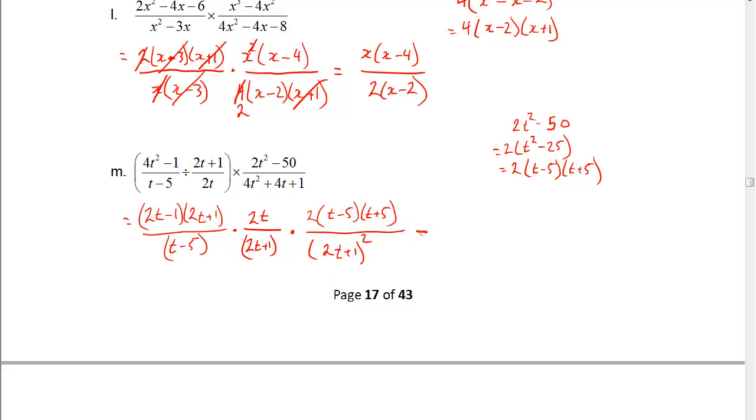So if we go ahead now and start canceling, what do we get? t minus 5 and t minus 5 can go. 2t plus 1, 2t plus 1, and that's it. So everything else can stay. So we end up with 4t times 2t minus 1 times t plus 5 all over 2t plus 1 squared. And so that's the simplified answer there.